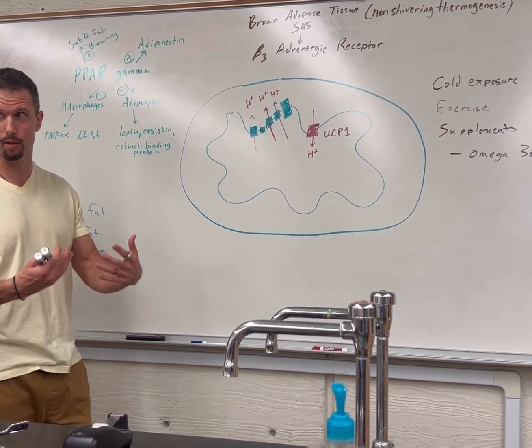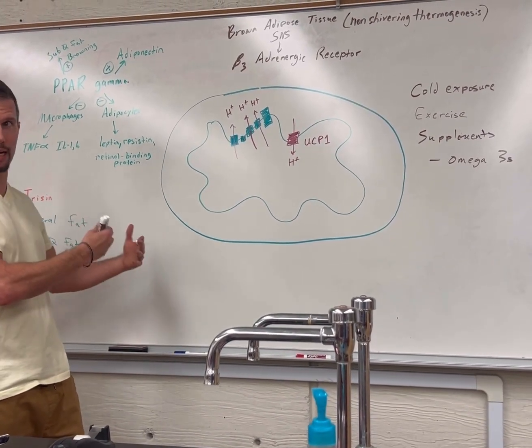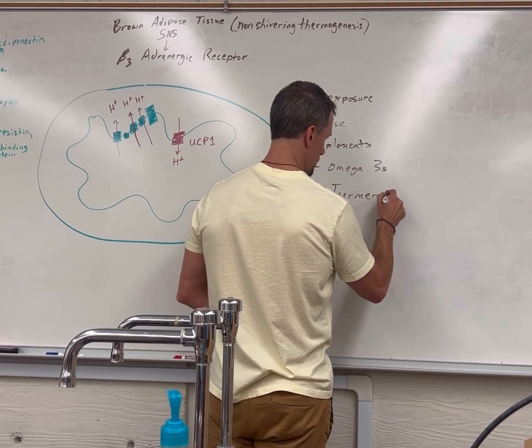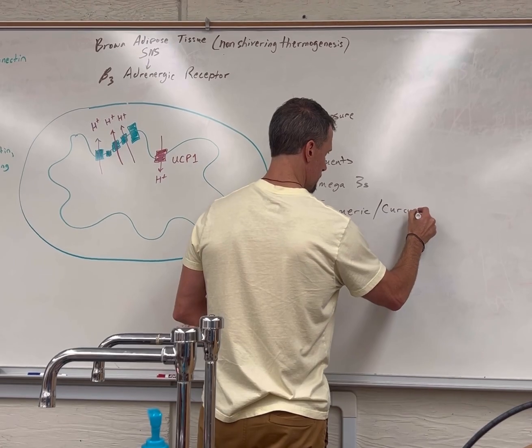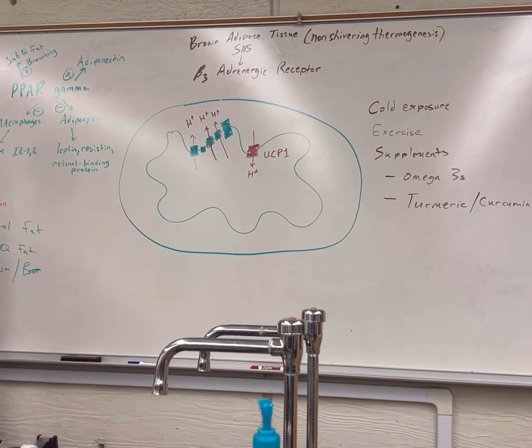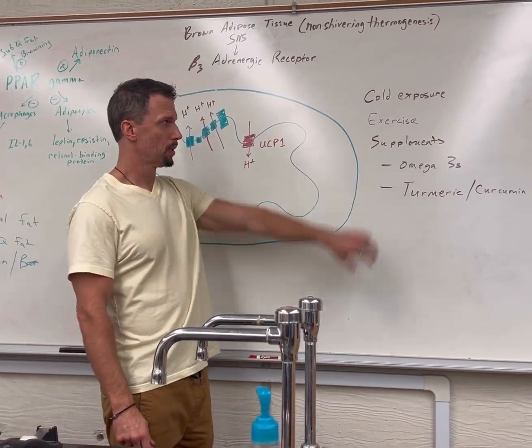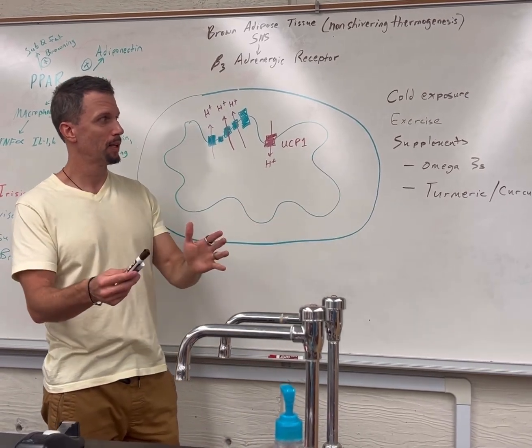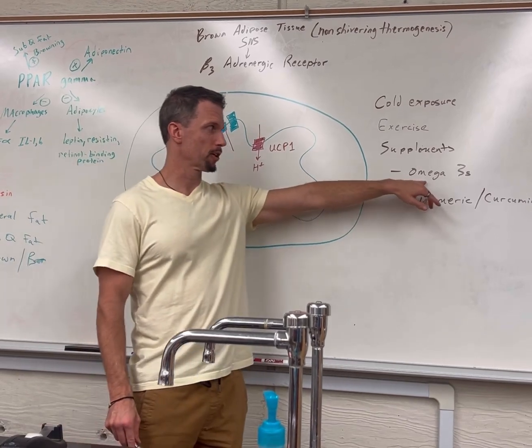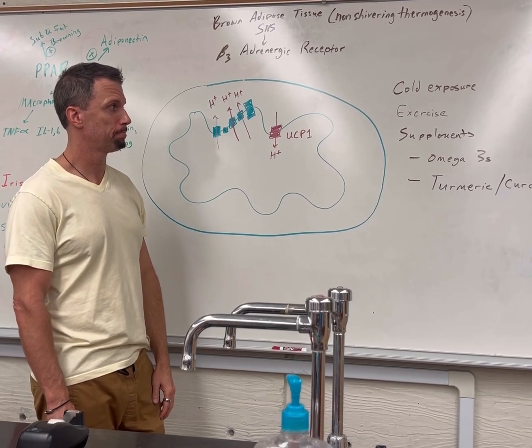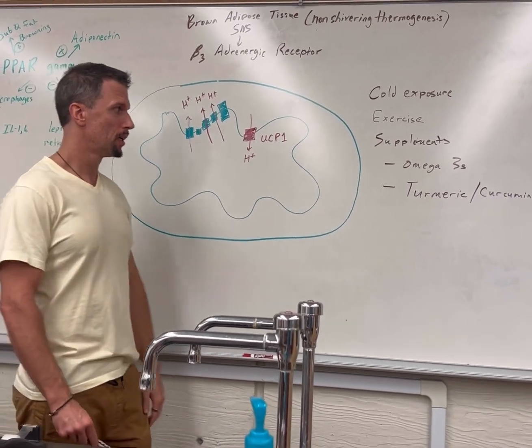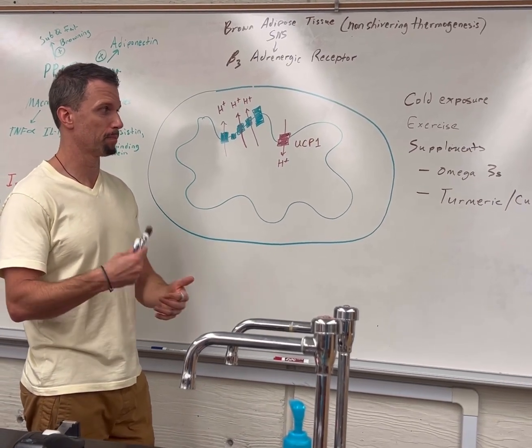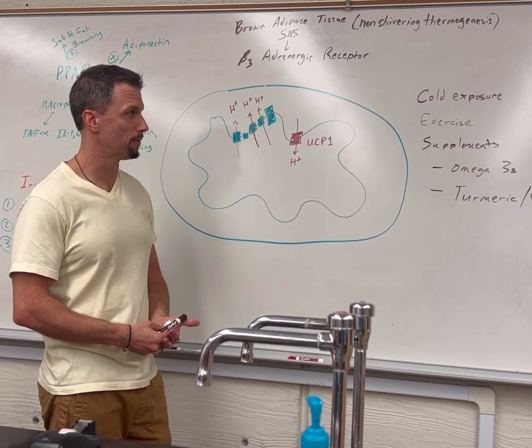A lot of these supplements work through similar mechanisms, sometimes increasing mitochondriogenesis. More mitochondria helps cause white fat to beige and then brown. Another one is turmeric or tumeric. The active ingredient is curcumin. This pops up over and over. These are both anti-inflammatory. Whenever you have omega-6s in phospholipids of cell membranes, that leads to arachidonic acid, prostaglandins, inflammation. More omega-3s in phospholipids is anti-inflammatory. Turmeric or curcumin is actually a COX-2 inhibitor.